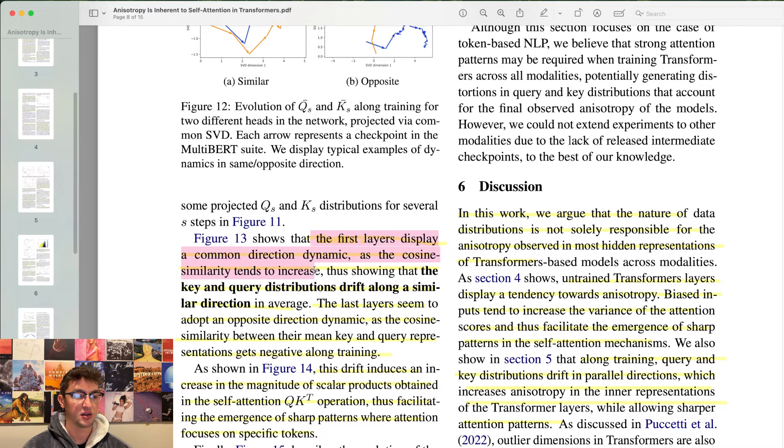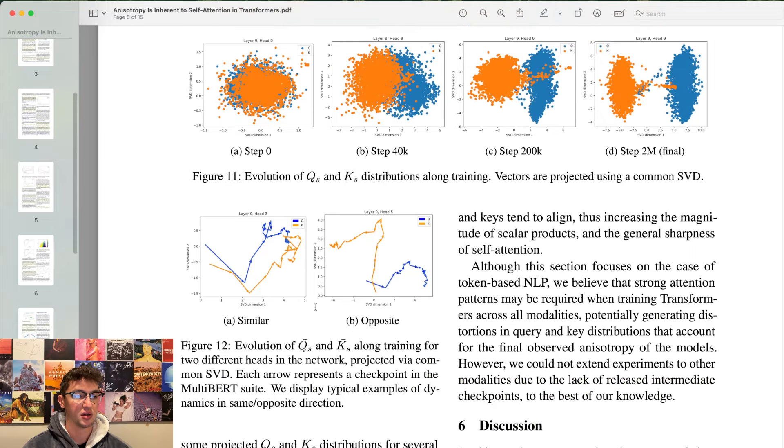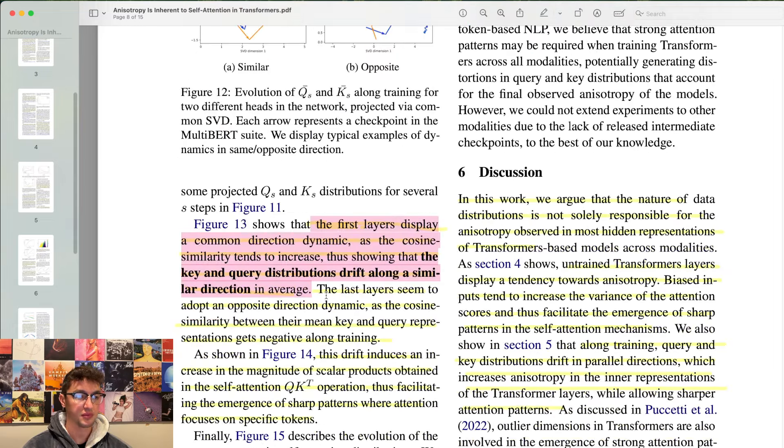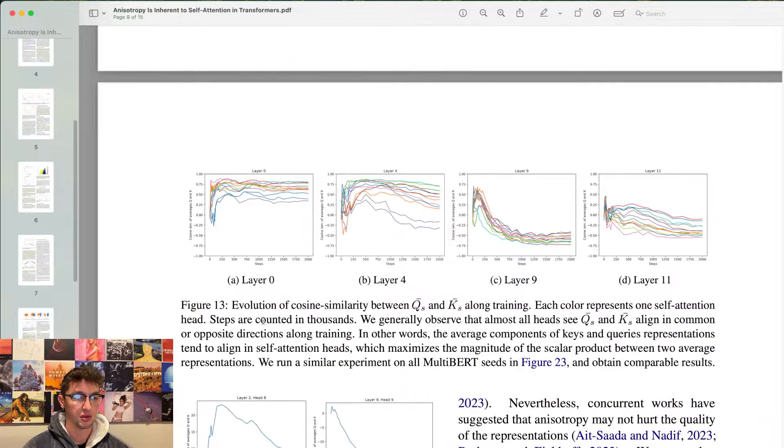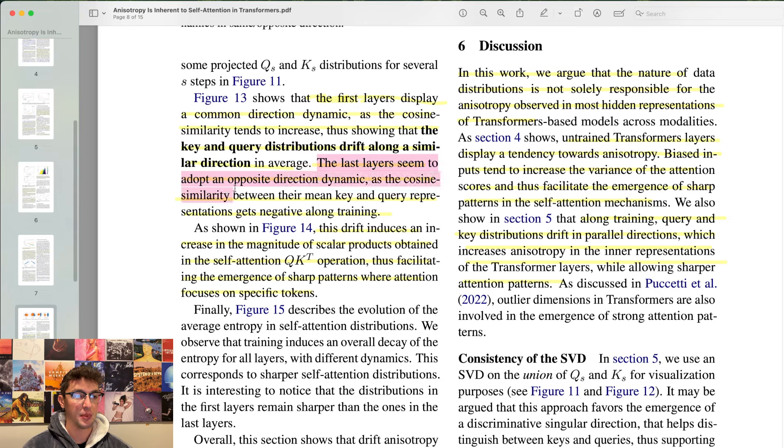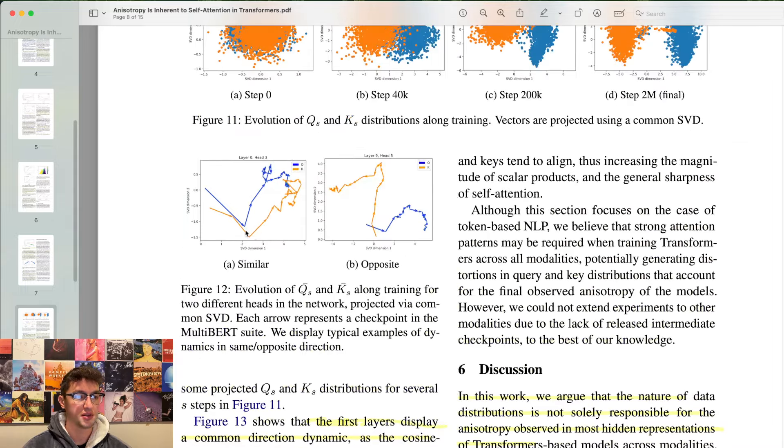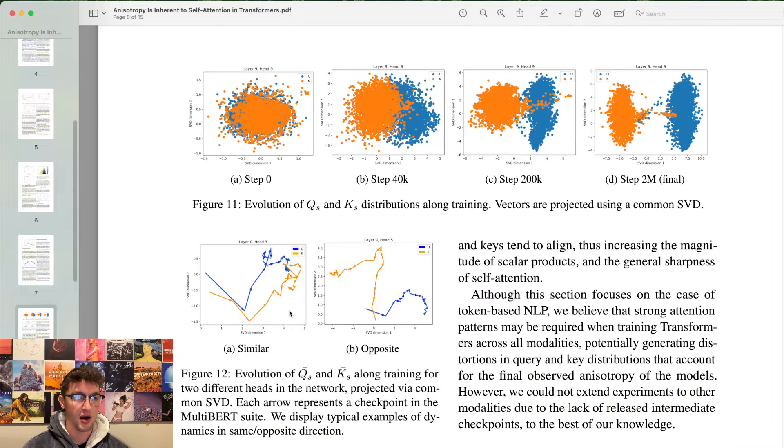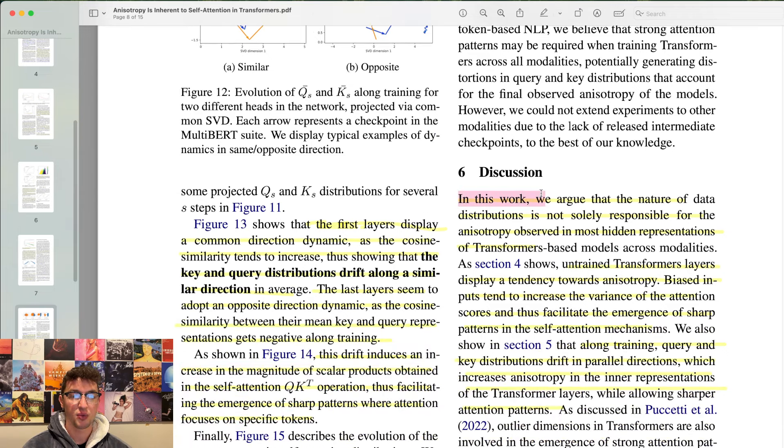In this section, we study the evolution of these query and key representations along training. Figure 13 shows that the first layers display a common direction dynamic as the cosine similarity tends to increase, thus showing that the key and query distributions drift along a similar direction in average. The last layers seem to adopt an opposite direction dynamic as the cosine similarity between their mean key and query representations gets negative along training. This drift induces an increase in the magnitude of scalar products obtained in the self-attention query key transpose operation, thus facilitating the emergence of sharp patterns where attention focuses on specific tokens.